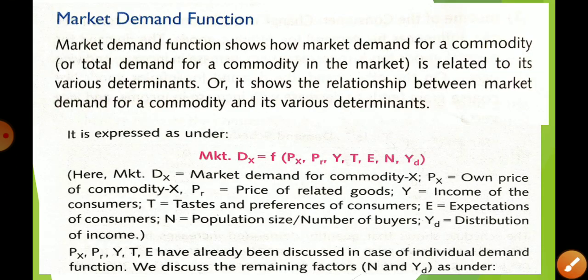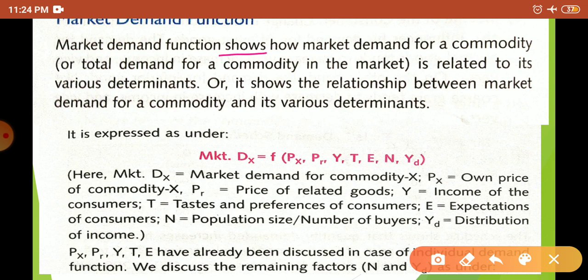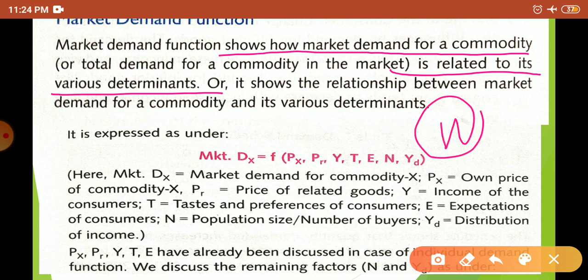Market demand of a commodity is related to its various determinants. Market demand means demand by all the buyers. The demand of all buyers for good X is influenced by various determinants. The five factors from individual demand function remain the same; there are just two additional ones.